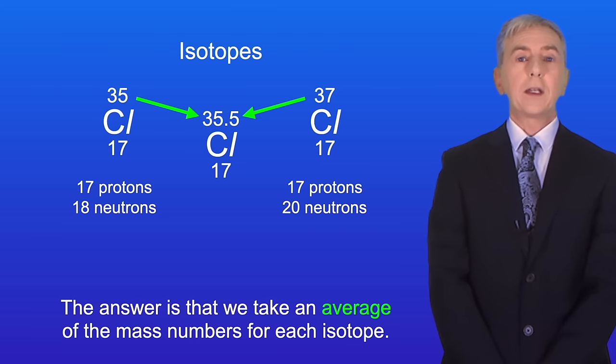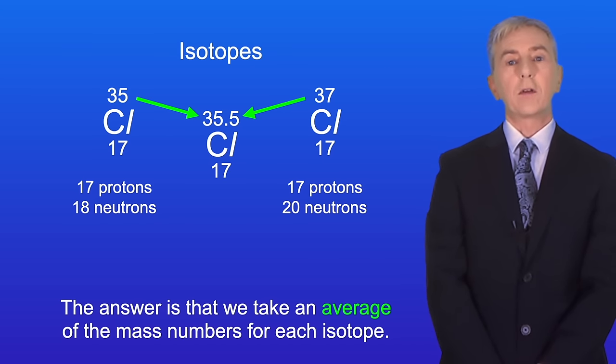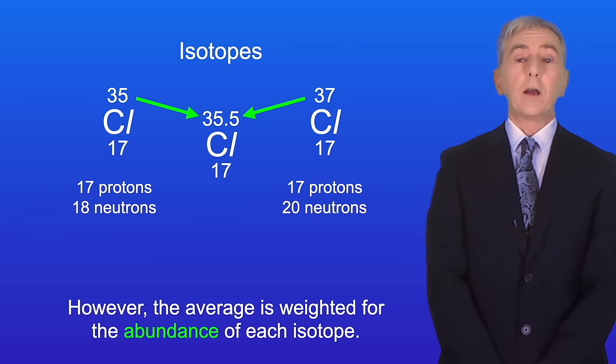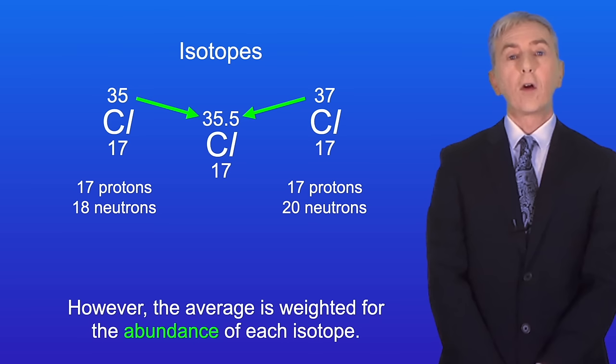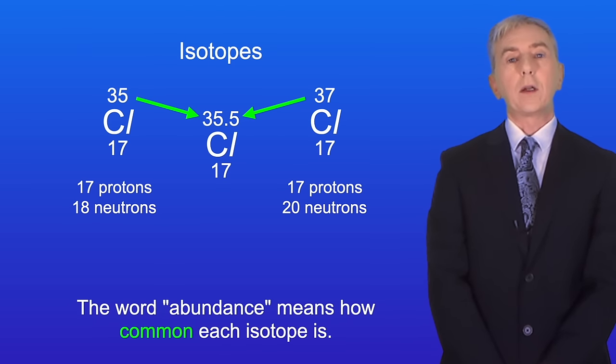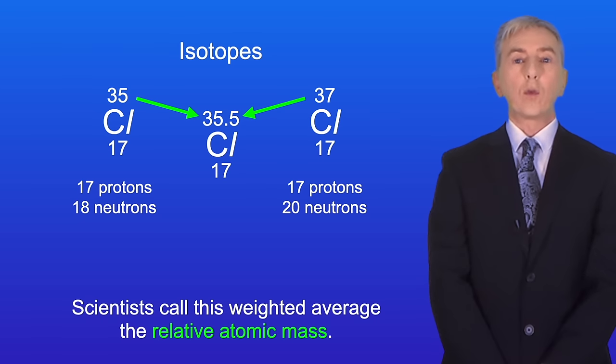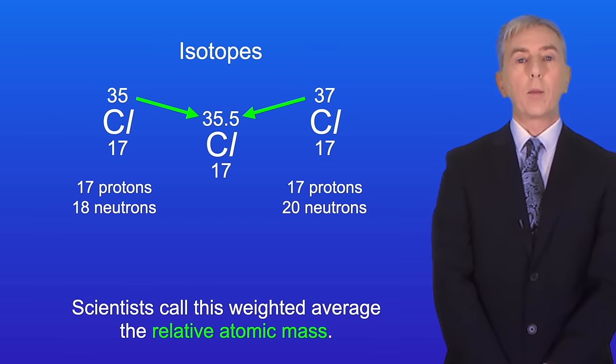Well, the answer is that we take an average of the mass numbers for each isotope. However, the average is weighted for the abundance of each isotope. And the word abundance means how common each isotope is. Scientists call this weighted average the relative atomic mass.